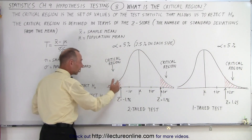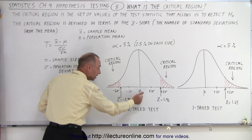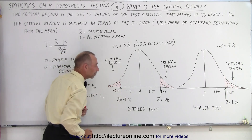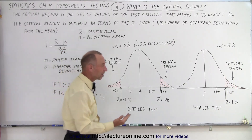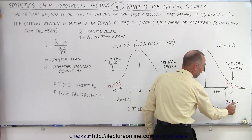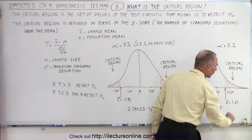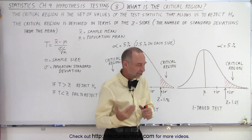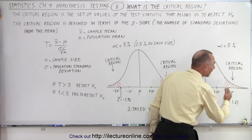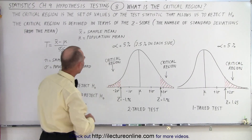On the left side, the critical region starts at Z equals minus 1.96, and any number to the left of negative 1.96 is in the critical region. For a one-tail test, the critical region starts at Z equals 1.65 — a bit further to the left compared to 1.96 — and every number greater than 1.65 falls into that critical region. Once you fall into the critical region, you reject the null hypothesis.